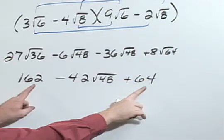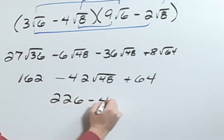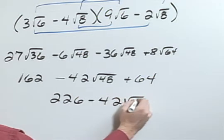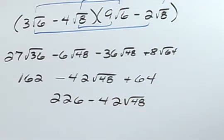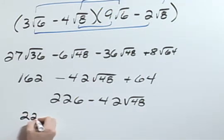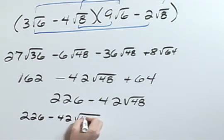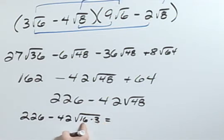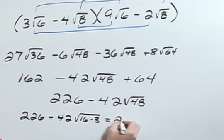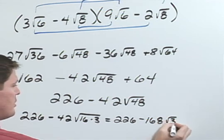Now I can combine these answers so that I have 226 minus 42 square root of 48. The square root of 48 can go even further reduced, so we can rewrite this as 226 minus 42 times the square root of 16 times 3. And then of course the square root of 16 is 4, so we can rewrite this as 226 minus 168 square root of 3.